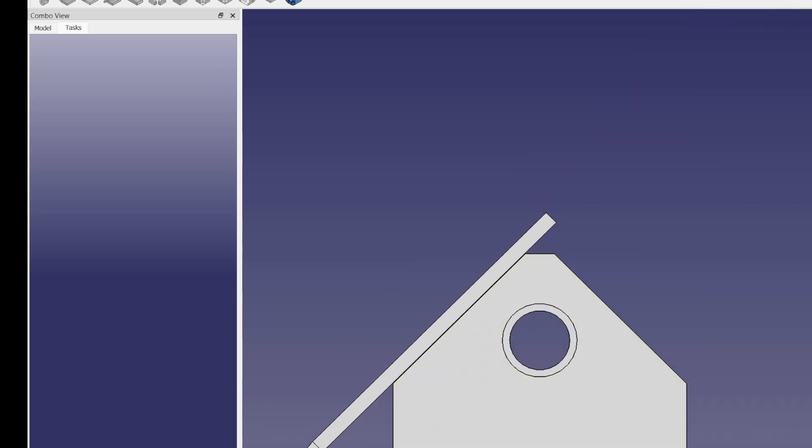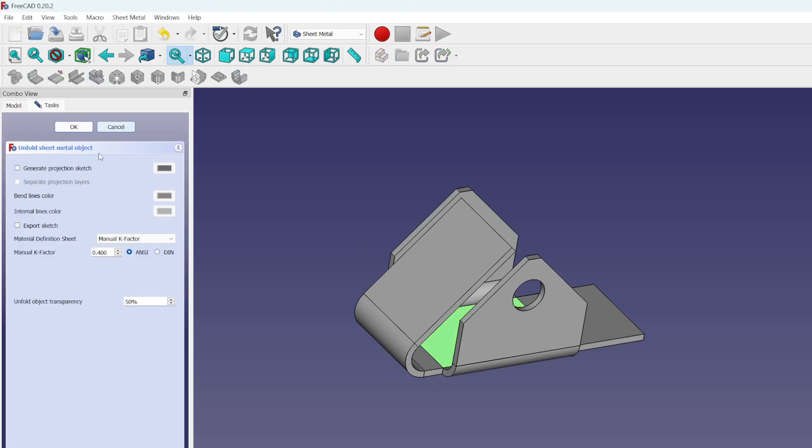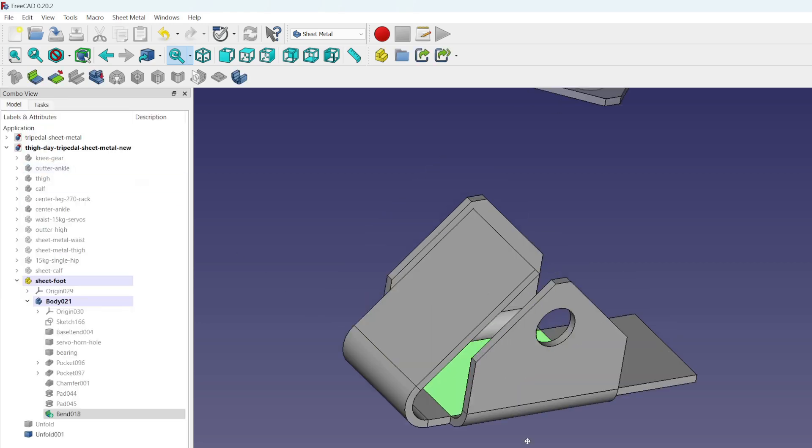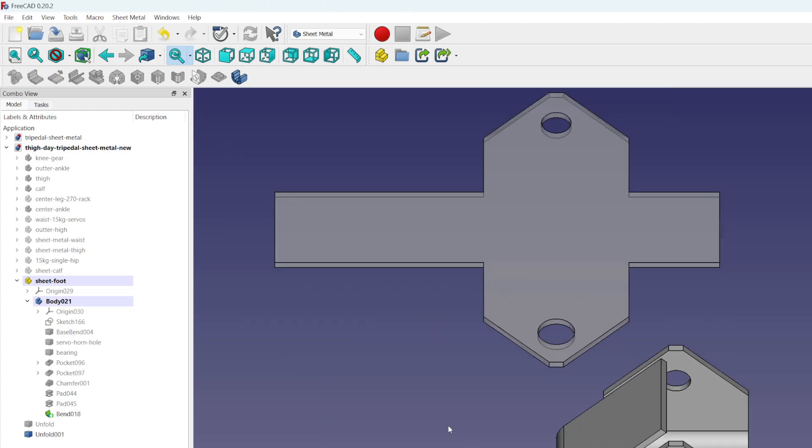If you wanted to make this yourself, you could buy a CNC machine and cut your own sheet metal. Then you'd have to find a way to bend it into place. This unfold button allows us to see what it looks like before the bending process happens.